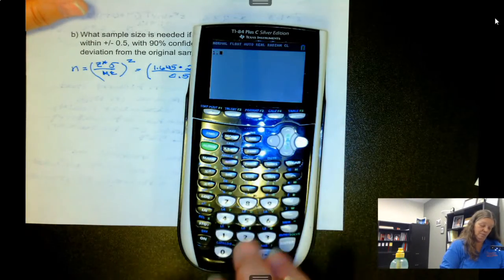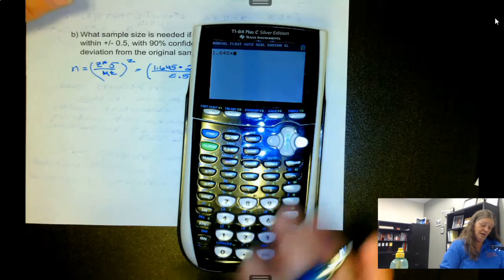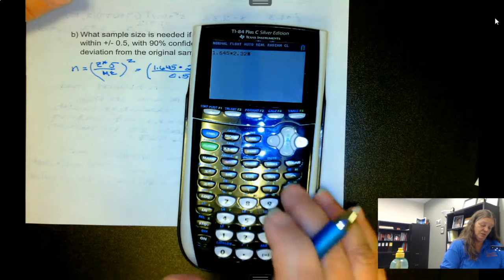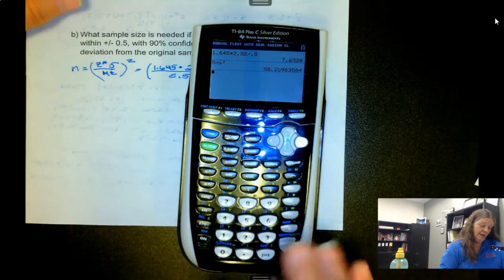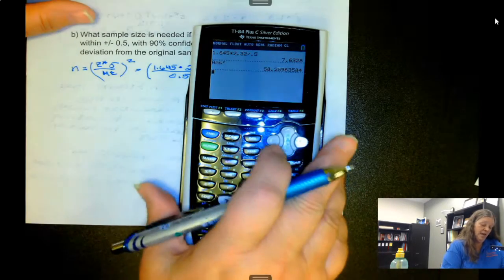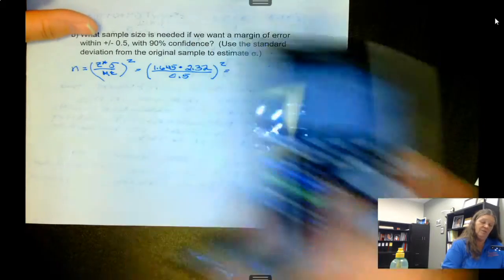So it's 1.645 times 2.32 divided by 0.5 and then squared gives us 58.25963584.